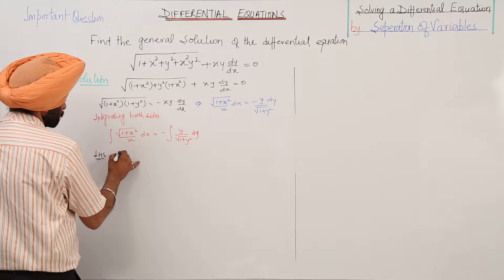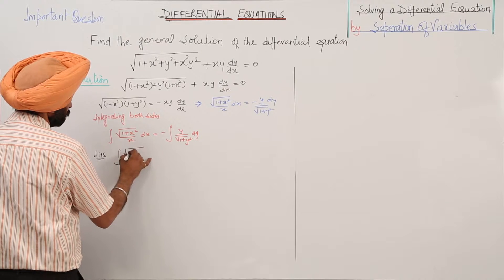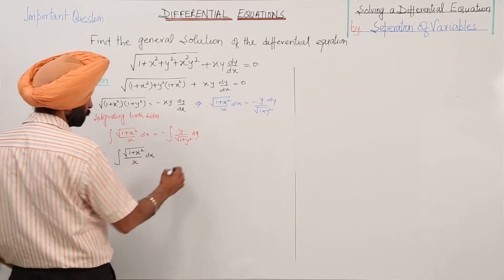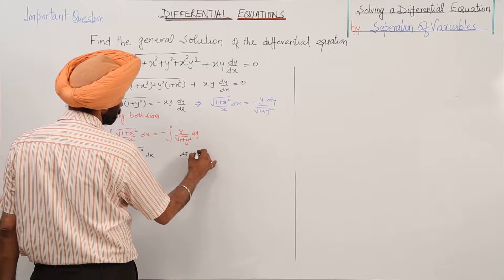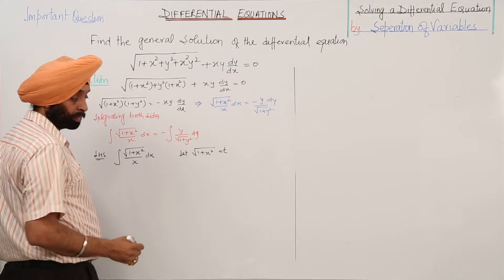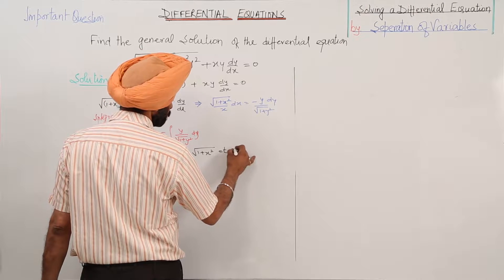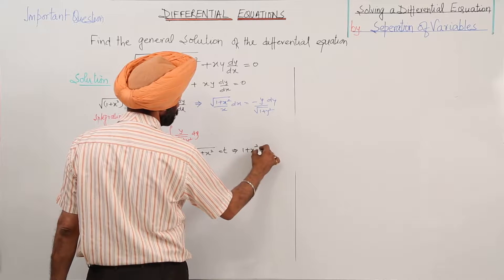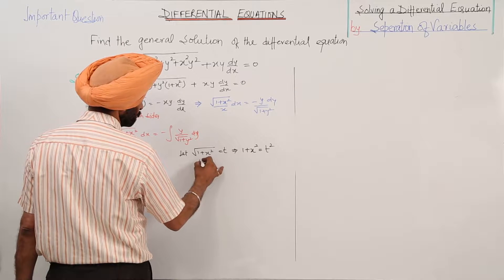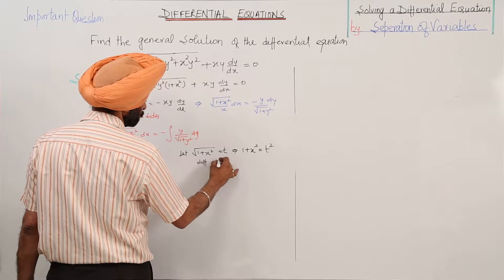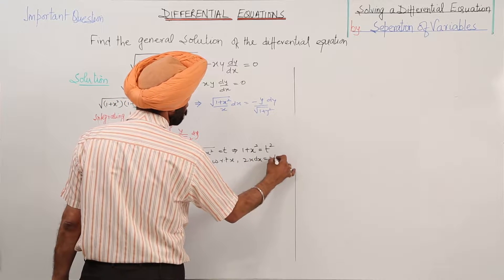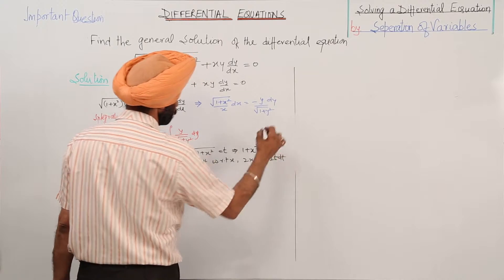Left hand side first: integration of square root of 1 plus x square upon x dx. Now let square root of 1 plus x square equal to t, which implies 1 plus x square equals t square. Differentiating with respect to x: 2x dx equals 2t dt.